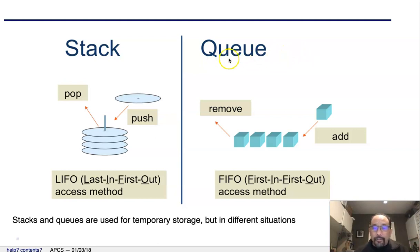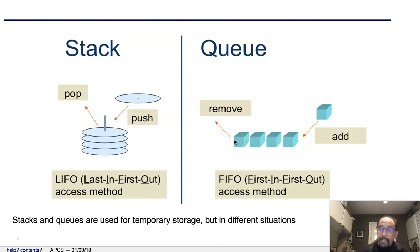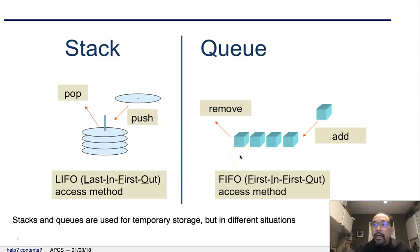Let's talk about what they are now. First, a queue. A queue is really just a line, and I think we're all used to lining up for things. You go to McDonald's and you stand in line. You get in line at the end, and then the first person at the front of the line is the first person who gets serviced. So you have an add method where you add something to the very end, and a remove where you remove from the very front of the line. We call that first in, first out.